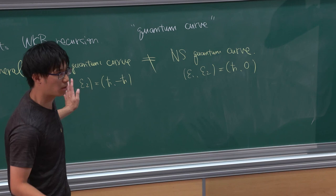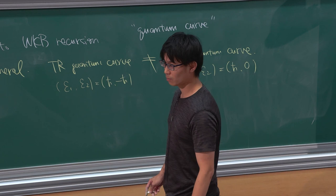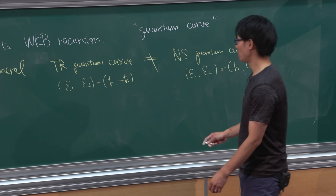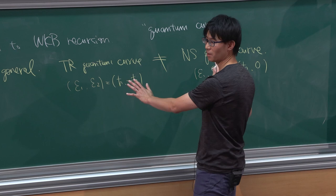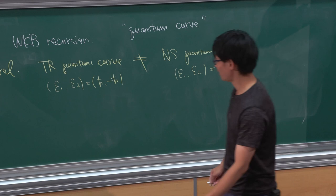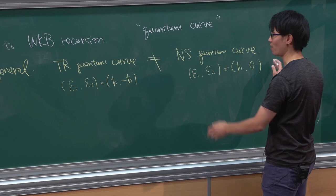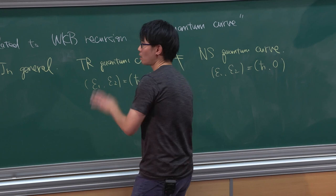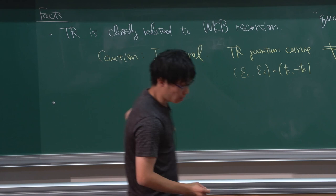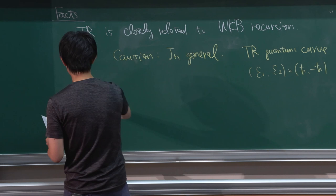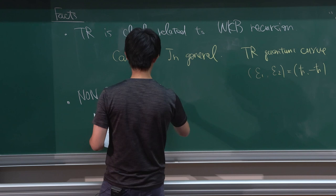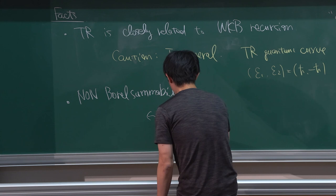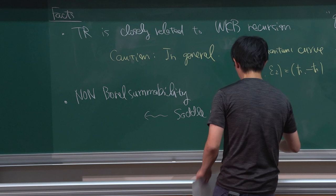At least in the Weber case there is a similarity, and we can look at some Borel singularities. In the WKB side, we know some non-Borel summability related to the existence of the Stokes graph — also known as the spectral network, as Lotte explained yesterday. The Stokes graph consists of turning points (zeros of Q) connected by lines obtained from the vanishing locus of the imaginary part emanating from each zero.